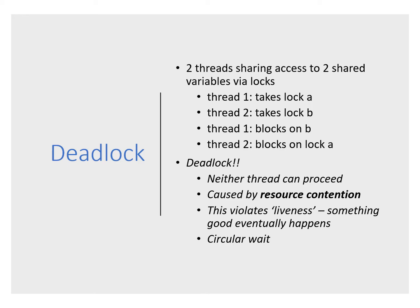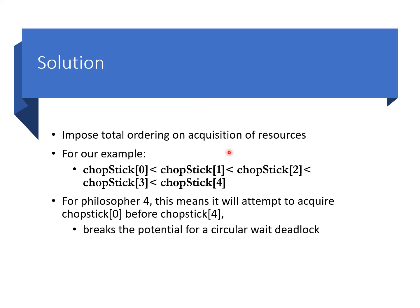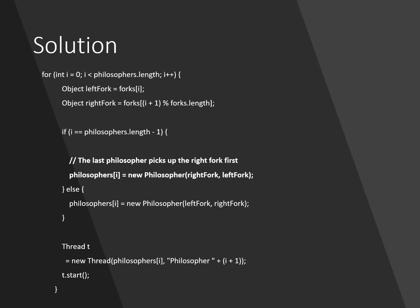The general solution is to impose a total ordering on the acquisition of resources. In the dining philosophers problem, we say any philosopher must acquire chopstick zero before chopstick one, before chopstick two, and so on. This is important because philosopher four would normally pick up chopstick four then chopstick zero, but with this ordering constraint they must acquire chopstick zero before chopstick four. This breaks the circular wait and the deadlock.